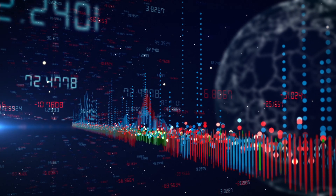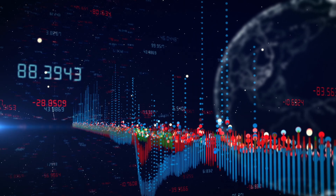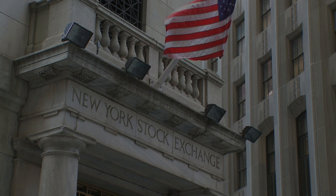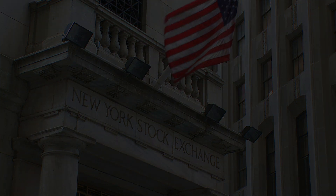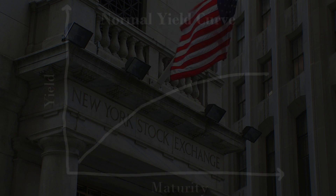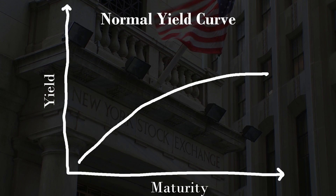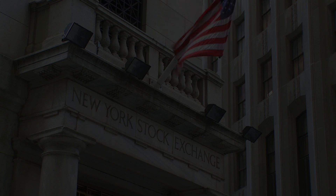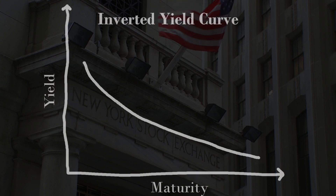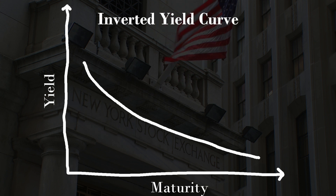So since these longer treasuries are riskier, investors would expect to get a higher return from those financial instruments. Therefore, if we take the yields — the rate of return of these treasuries at different maturities — and graph these values, we would get the yield curve for the U.S. Typically, it should look like an upward sloping line. As maturity gets higher, you would expect the interest rate to also be higher than shorter term assets.